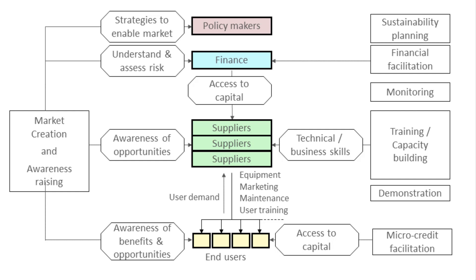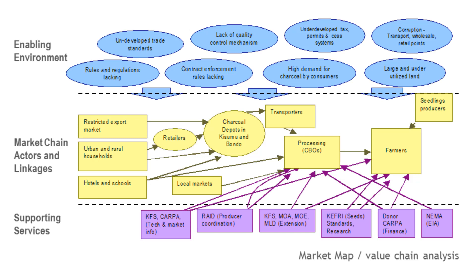This is a type of market system diagram. Here is an example developed by Practical Action showing the market chain and actors, supporting services, and the enabling environment that provides these services within that area. That covers the tools around market mapping and value chain analysis.